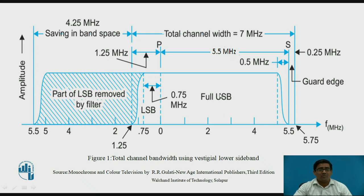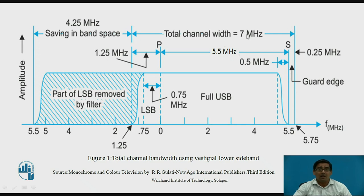We transmit the full upper sideband with no problem. For the vestige — meaning for saving the bandwidth — we remove parts of the LSB. We cannot remove the full part because that type of filter cannot be designed. That's why we remove the lower part of the LSB. Therefore, the total channel width becomes 7 MHz. In the previous lecture, we studied the total requirement was 11 MHz; now we reduce that to 7 MHz.